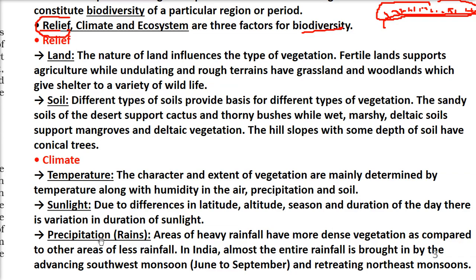Precipitation is an important term — it is not just rain, but refers to all moisture content in wind or air, including water, snow, and frost. We generally say rain because most precipitation gives rise to rain. Where there is heavy rainfall, there will be more plants and dense vegetation.